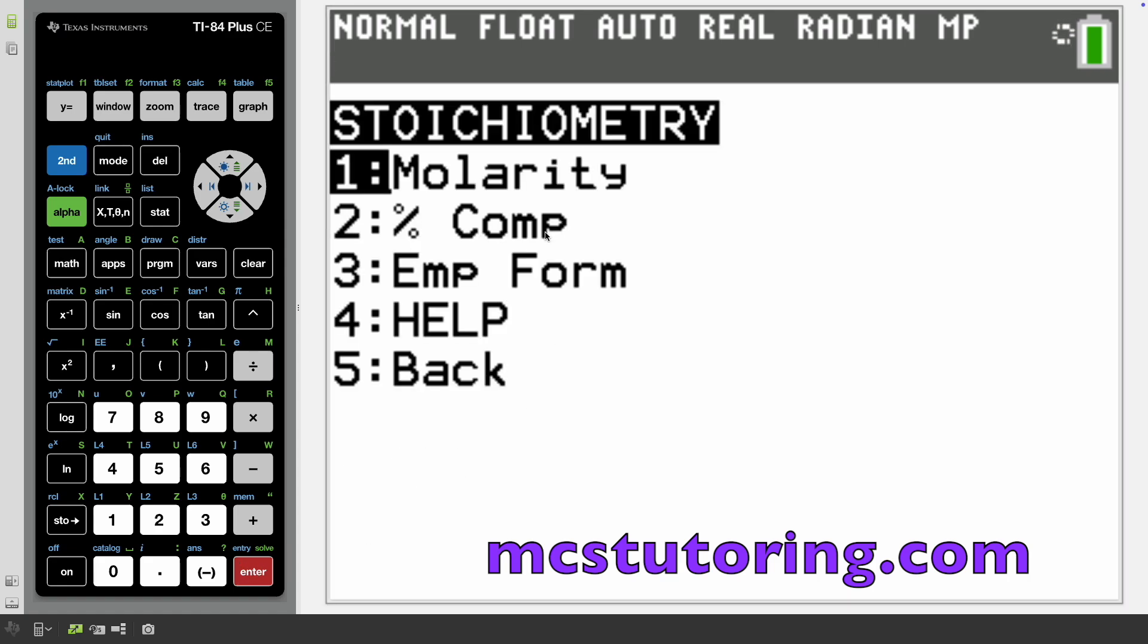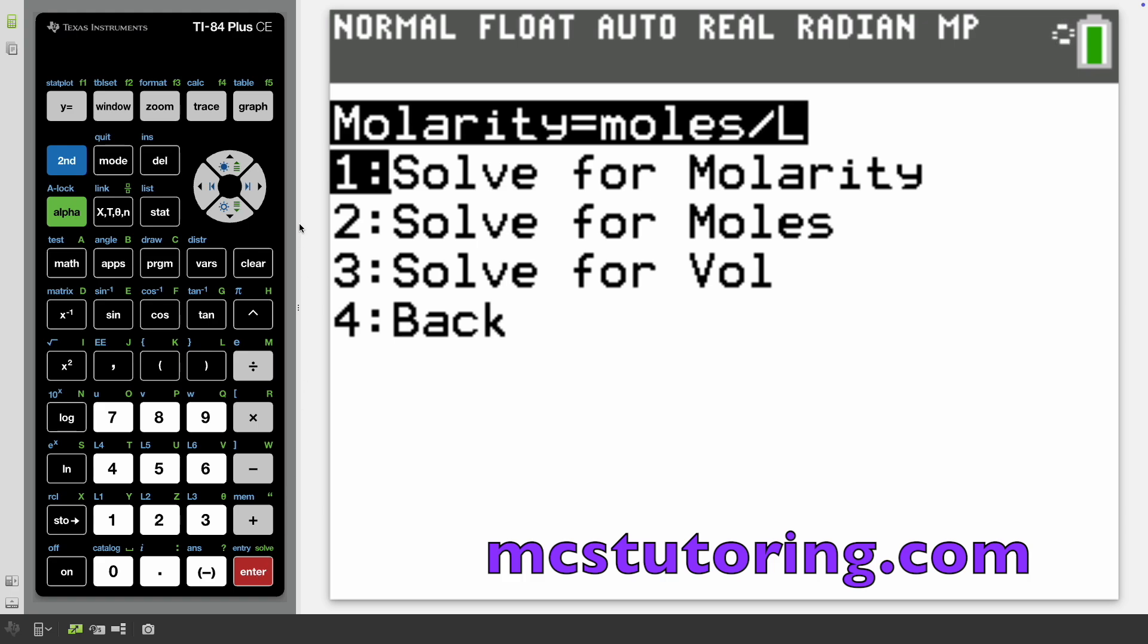Let's go to stoichiometry. You can calculate different things: molarity, percent composition, empirical form, and help. Let's go to molarity. I'm going to make up some fictitious numbers here. First it gives you the formula, molarity equals moles over liters. Let's solve for molarity.